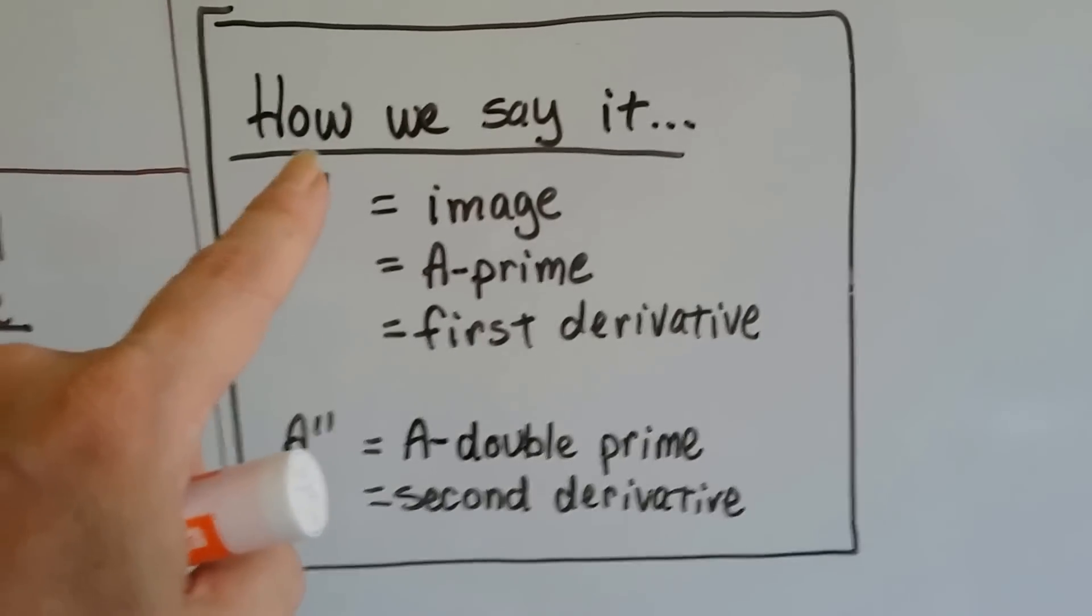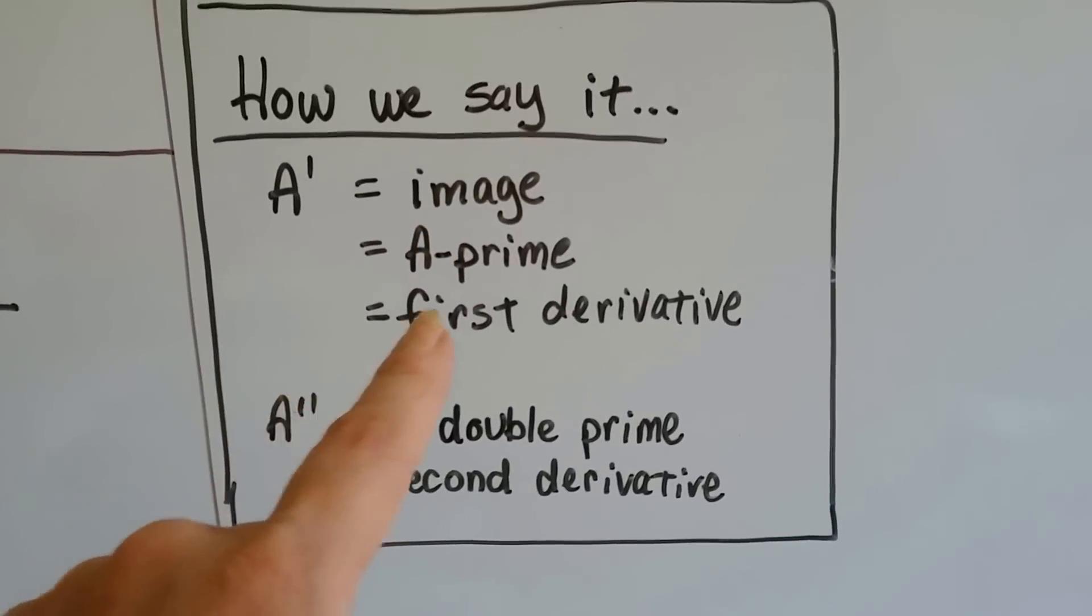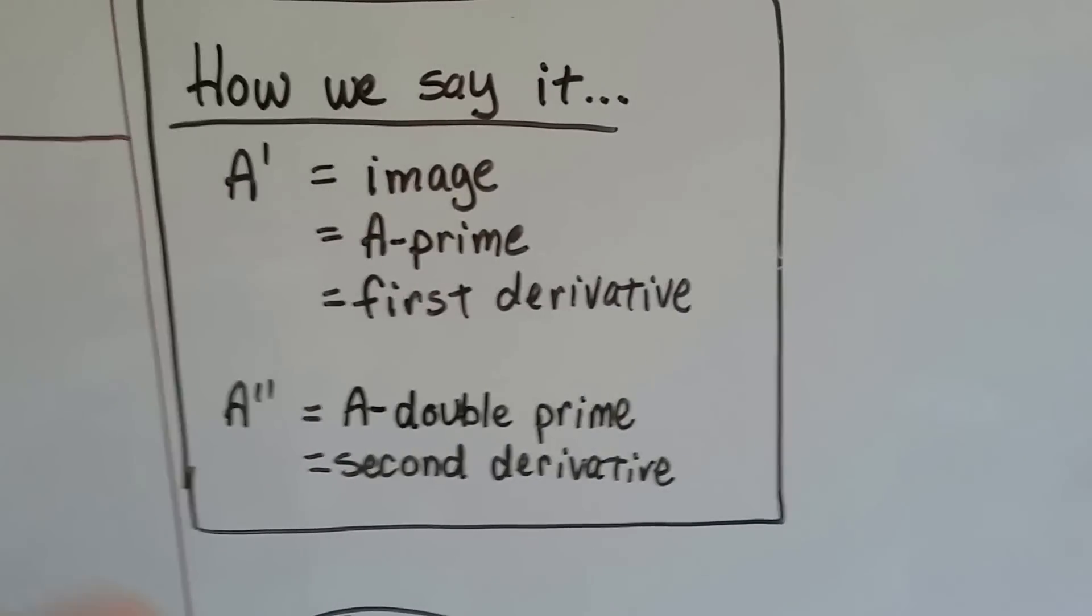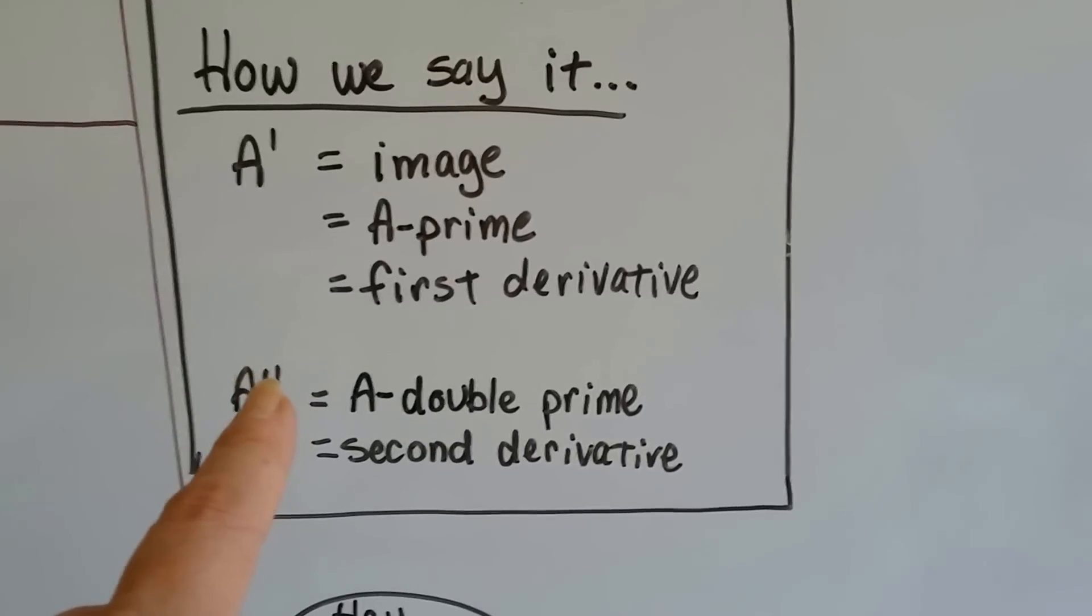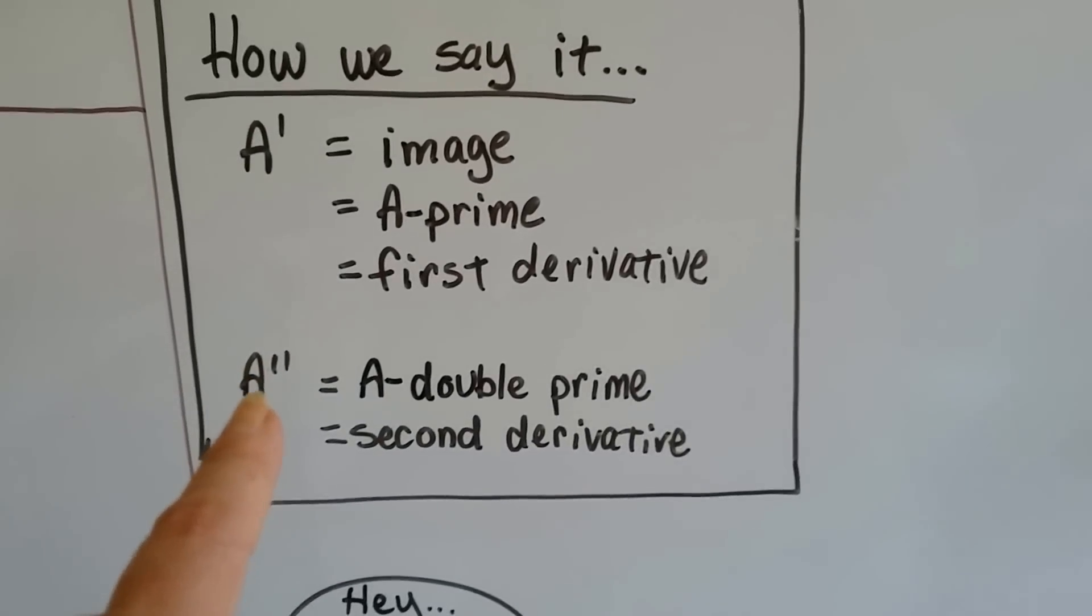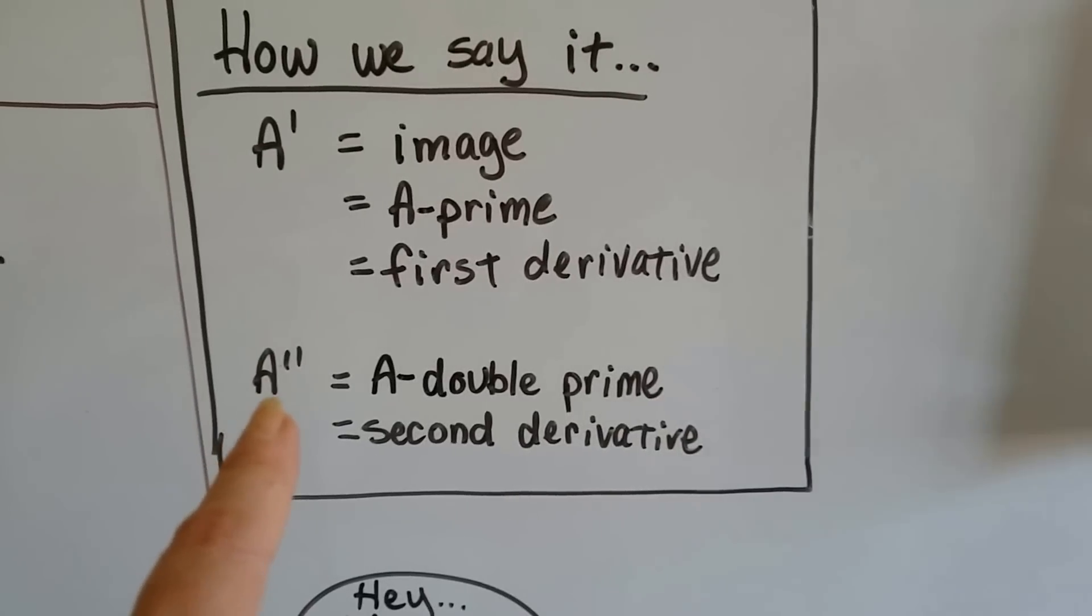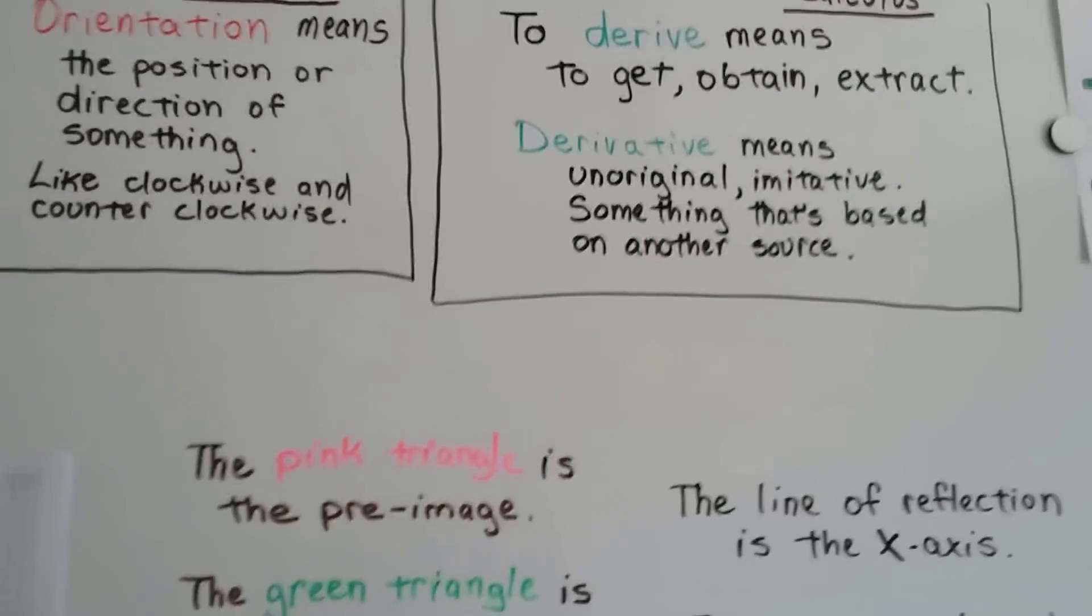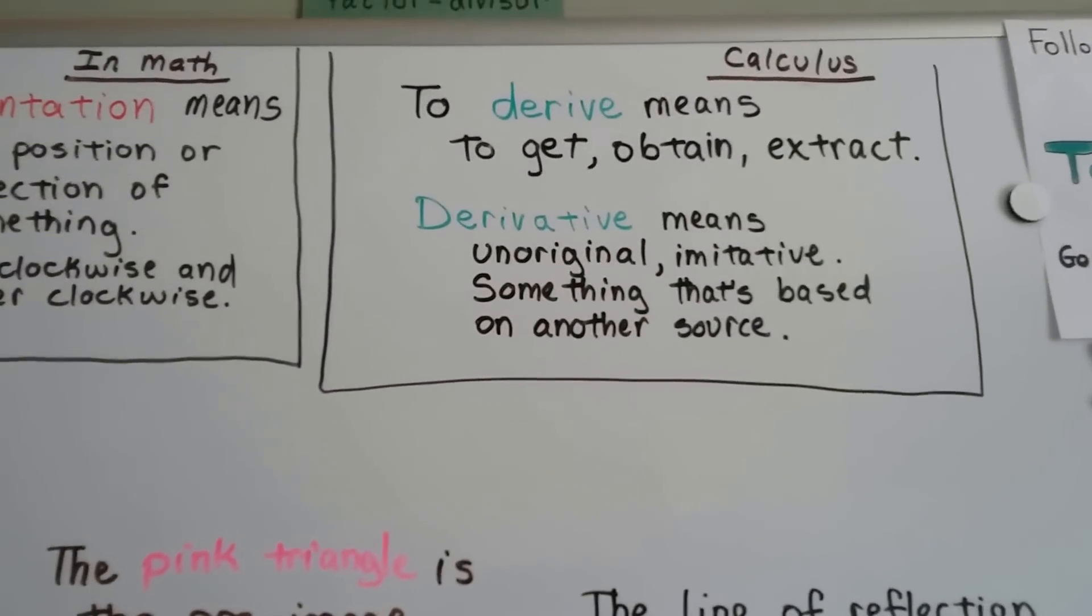And the way you would say it is A prime, it's the image. It's also the first derivative, and we talked about derivative a couple videos ago. When you see two of these lines, that's referred to as A double prime, it's the second derivative.